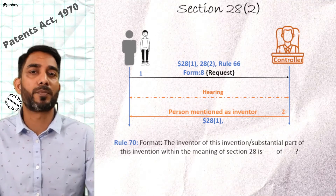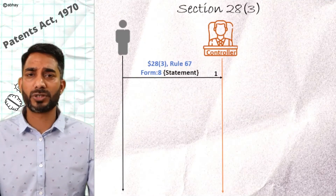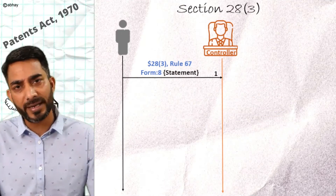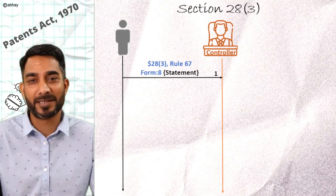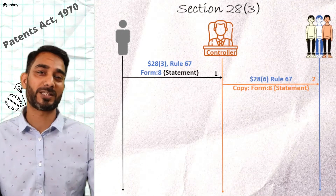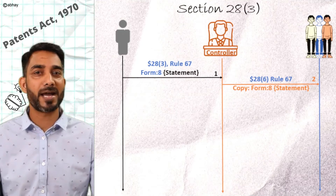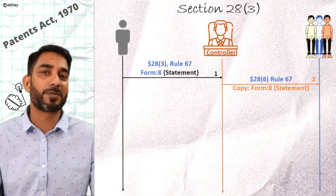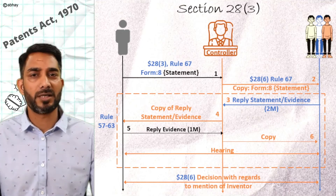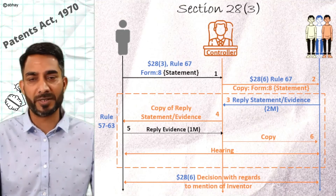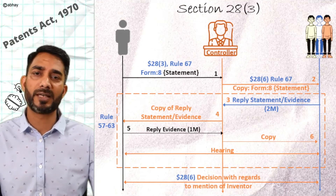This was the case where the claimant had support from the applicant. What about the case where the applicants are not supporting such a request from the claimant? In such cases, the claimant can approach the controller as per Section 28 again, using Form 8 and providing the relevant details why his name should be mentioned as the inventor. The controller will pass on such a request to the applicants, and since this is more like an opposition proceeding, there will be replies, responses, document submissions, and hearings undertaken as per Rule 57 to 63. Upon conclusion of the hearing, the controller will issue a decision either allowing or disallowing such mention of inventorship as per Section 28.